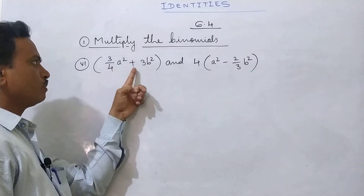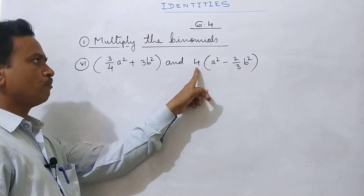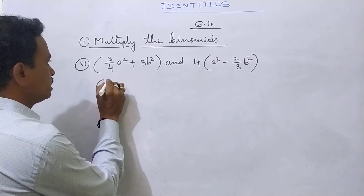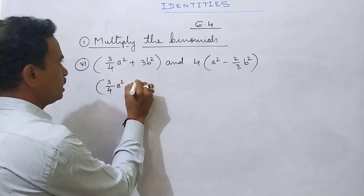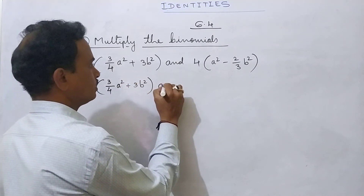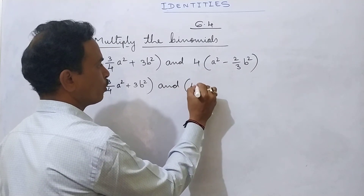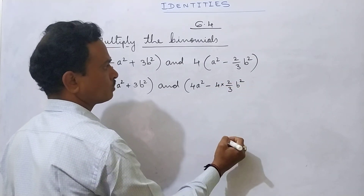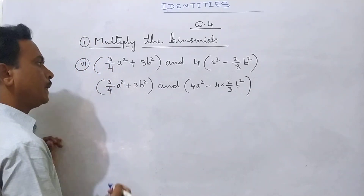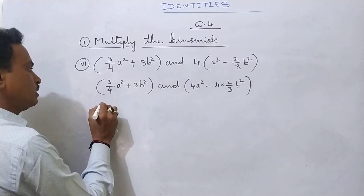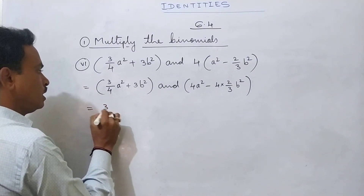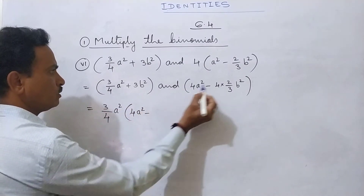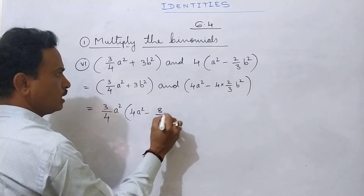Question 6: (3/4 a² + 3b²) and 4(a² - 2/3 b²). First write the first binomial as it is: (3/4 a² + 3b²). Then multiply 4 into the second factor: 4 times a² becomes 4a², and 4 times 2/3 b² becomes 8/3 b². So second binomial is (4a² - 8/3 b²). Then multiply these two binomials: first term 3/4 a² into second binomial (4a² - 8/3 b²).